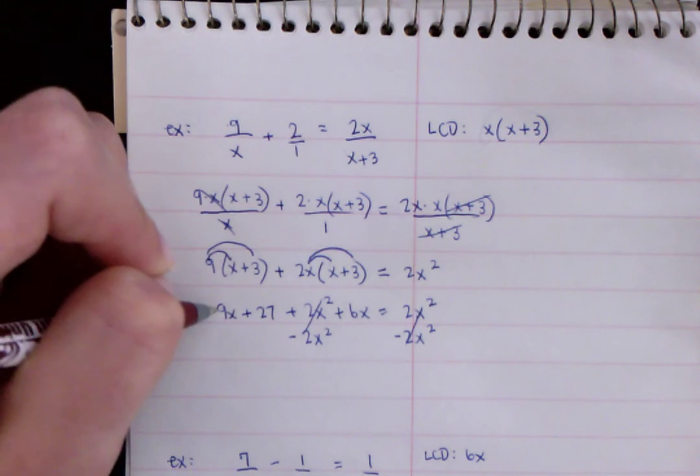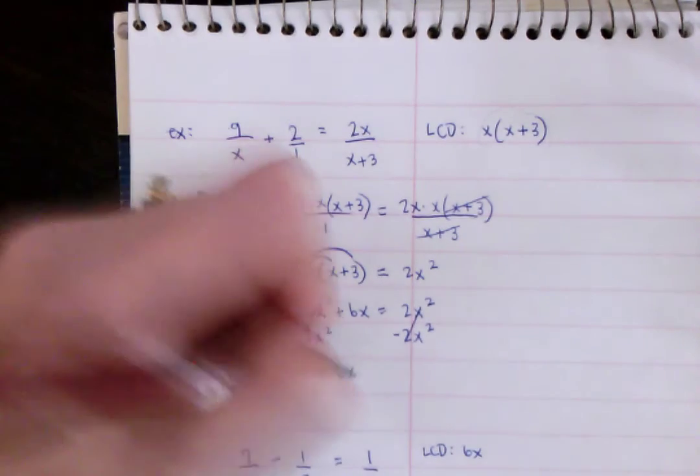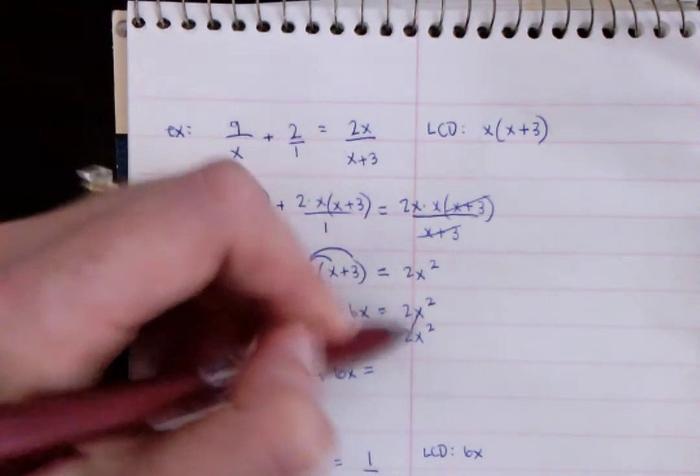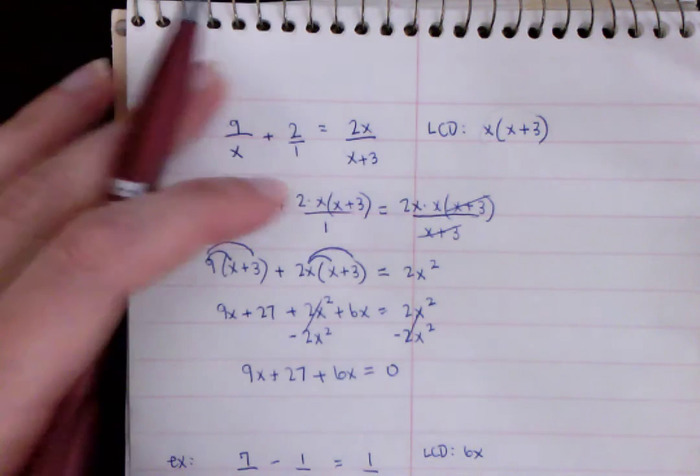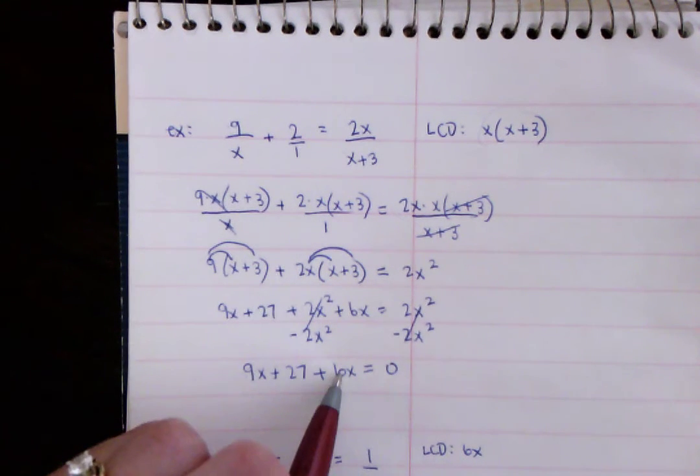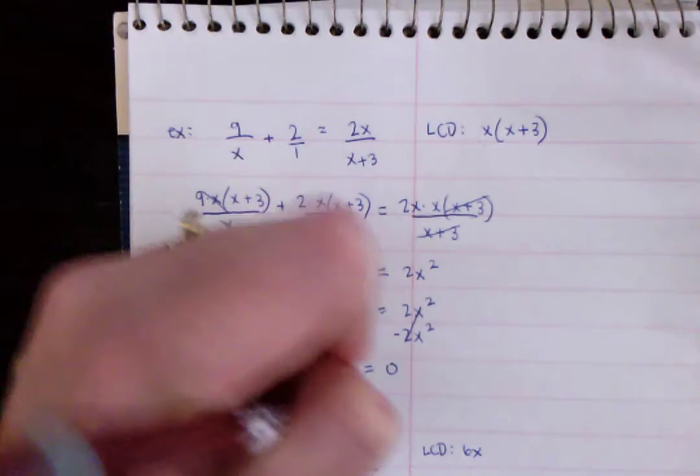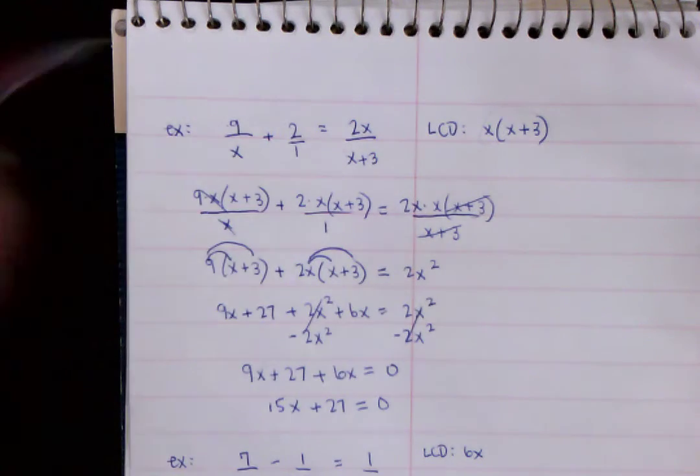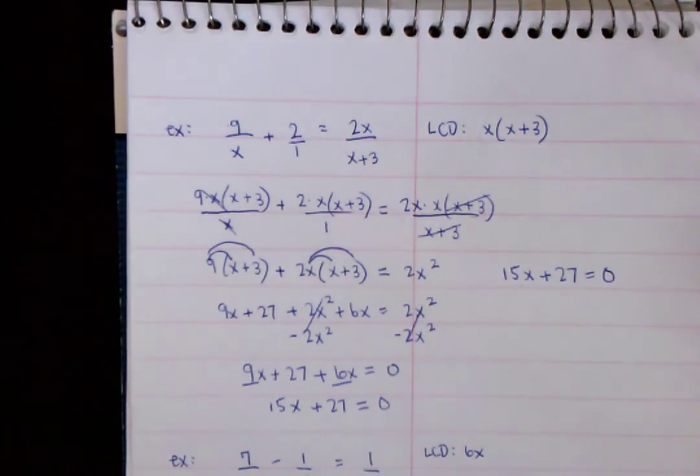So now in our equation, we have 9X plus 27 plus 6X equals zero because there's nothing over here now. All right. And then again, I'll move over to the side here. But 9X plus 6X is 15X. 15X plus 27 equals zero. So I just combined these two together. But I'll move over here, like I said, because I need more room. So 15X plus 27 equals zero. And now I have to solve that equation.